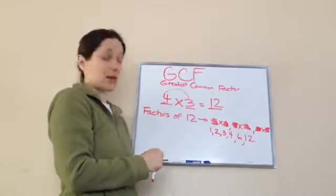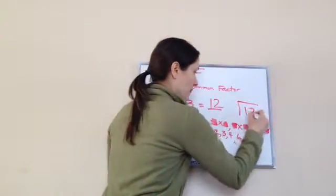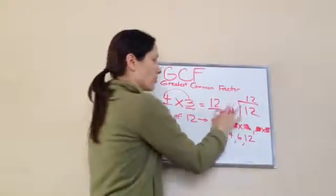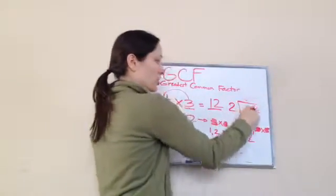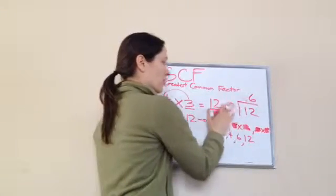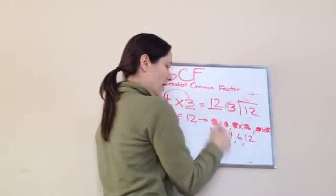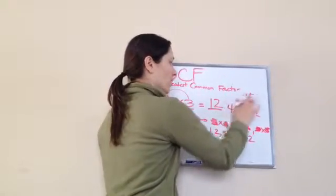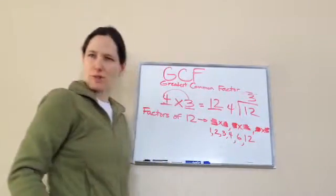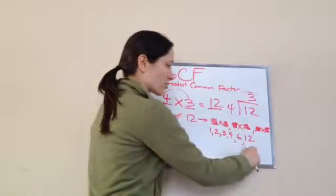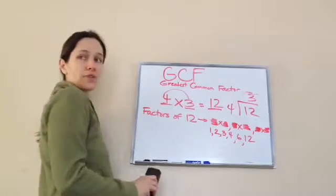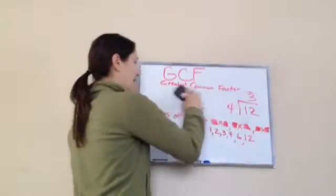Does that give me all of them? Yes. These are the factors of 12: one, two, three, four, six, and 12. So basically what I'm saying is one would go into 12 twelve times. Two would go into 12 six times. Three would go into 12 four times. Four would go into 12 three times. You see what I'm saying? These are the factors that go into 12. Got it?